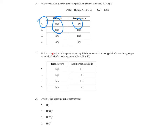Question 25 asks which combination of temperature and equilibrium constant is most typical of a reaction going to completion. Using ΔG = −RT ln K, for ΔG to be very negative we want a large positive value of RT ln K — meaning high T and a large K (greater than 1). High temperature and a large K point to answer A.